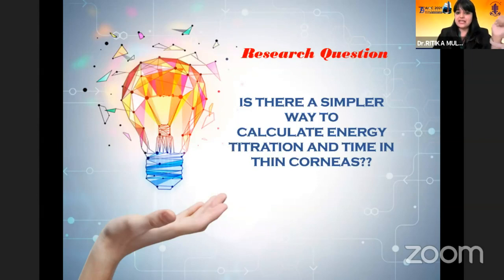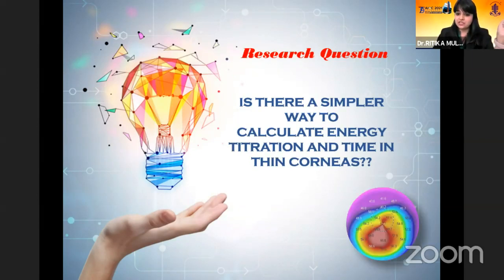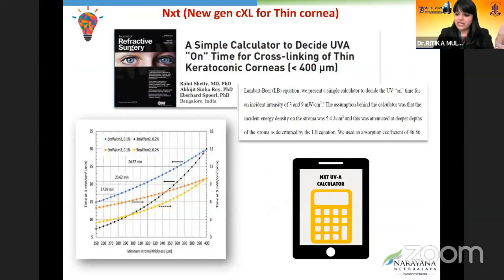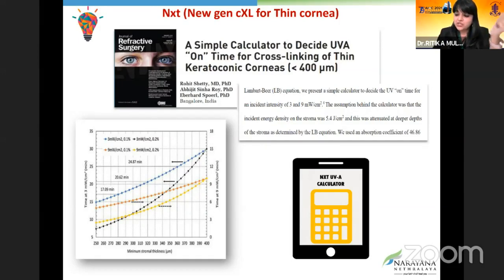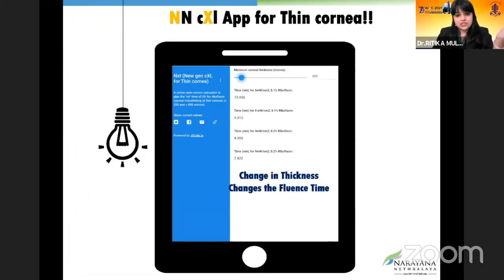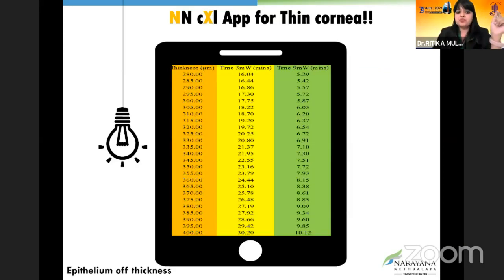Our research question: is there a simpler way to calculate energy titration and time in thin corneas? We designed our own UV calculator using the Lambert-Beer equation to decide the UV on-time. The process can be tailored based on corneal thickness to deliver a crosslinking effect with an adequate safety zone. This is how our calculator looks — the change in thickness changes the fluence time, giving us a 3 milliwatt and 9 milliwatt range using 0.1% and 0.2% riboflavin respectively. This is the epithelium-off thickness chart corresponding to the time.